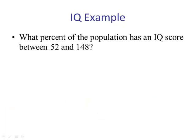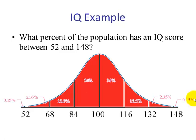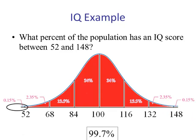Next example: what percent of the population has an IQ score between 52 and 148? We see that this is three standard deviations below the mean and three above. So the empirical rule says this is approximately 99.7%. The only thing left is the small tail less than 52 and the small tail greater than 148.